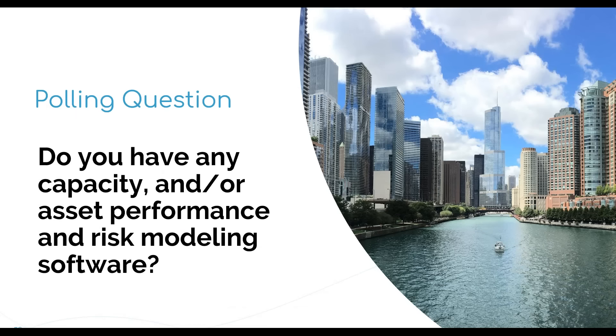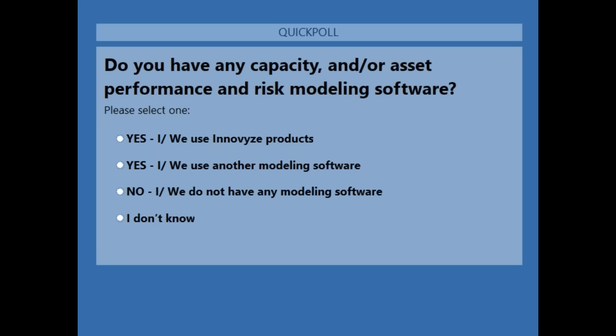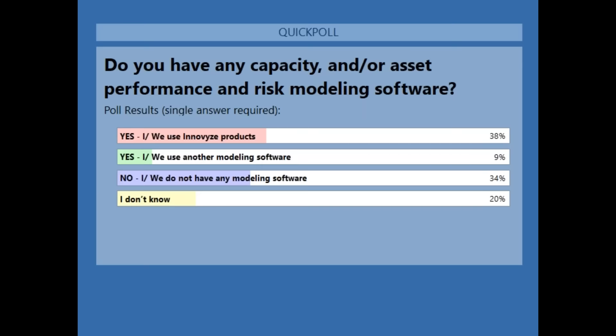Our final polling question: Do you have any capacity and/or asset performance and risk modeling software? Results: 38% said yes, they use Innovize products. 34% said no, they do not have any modeling software. 20% did not know. And 9% said yes, they use another modeling software.